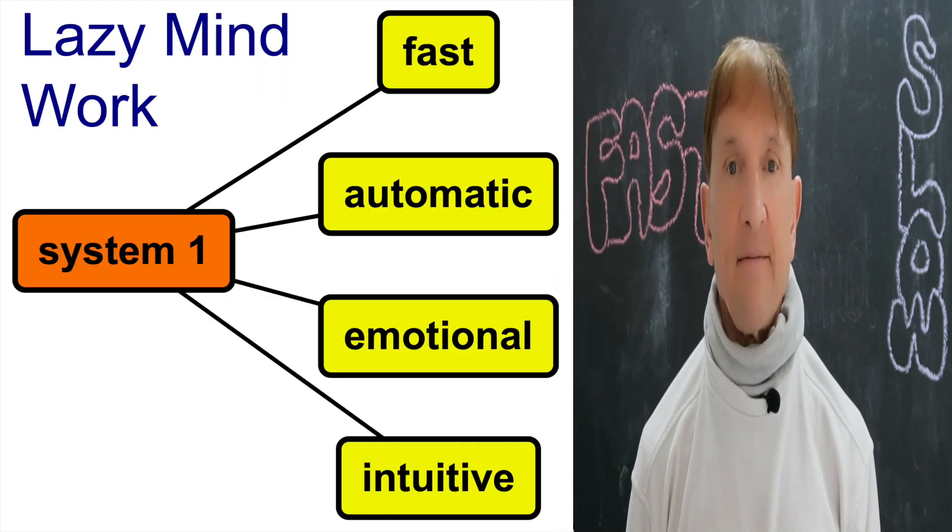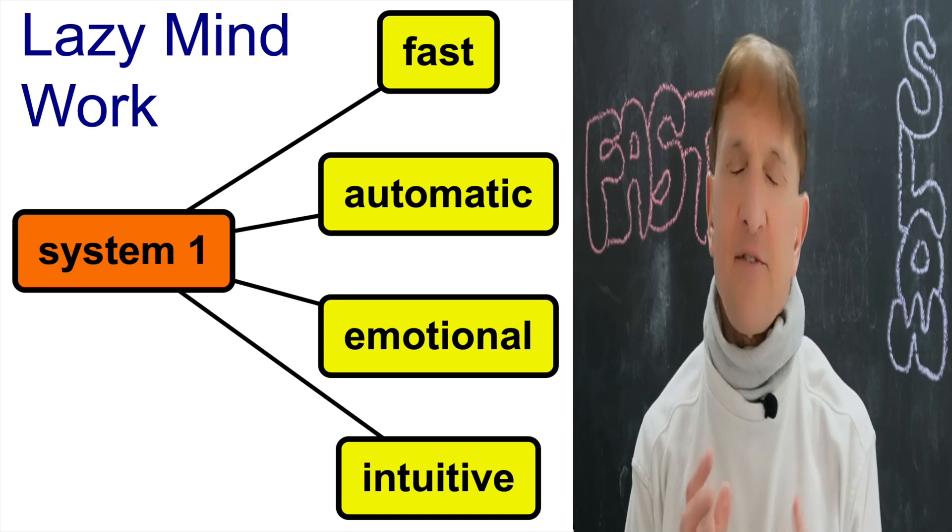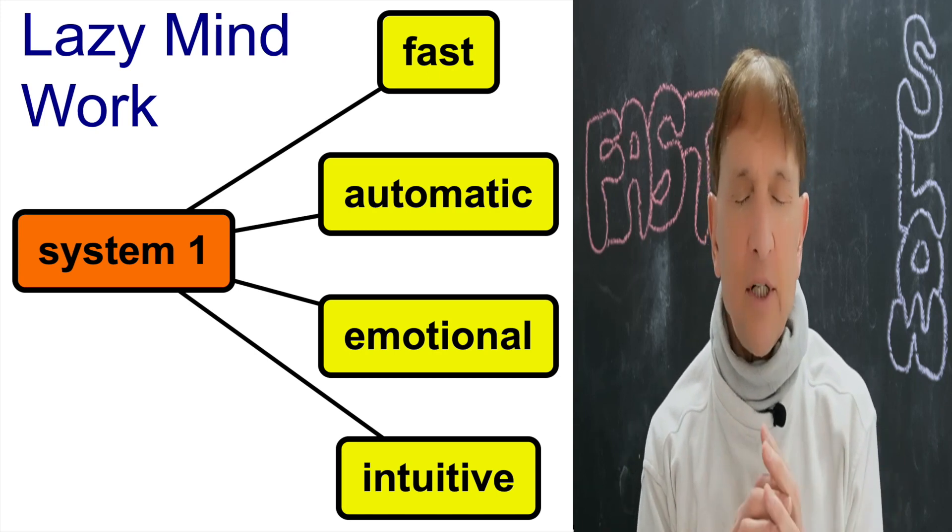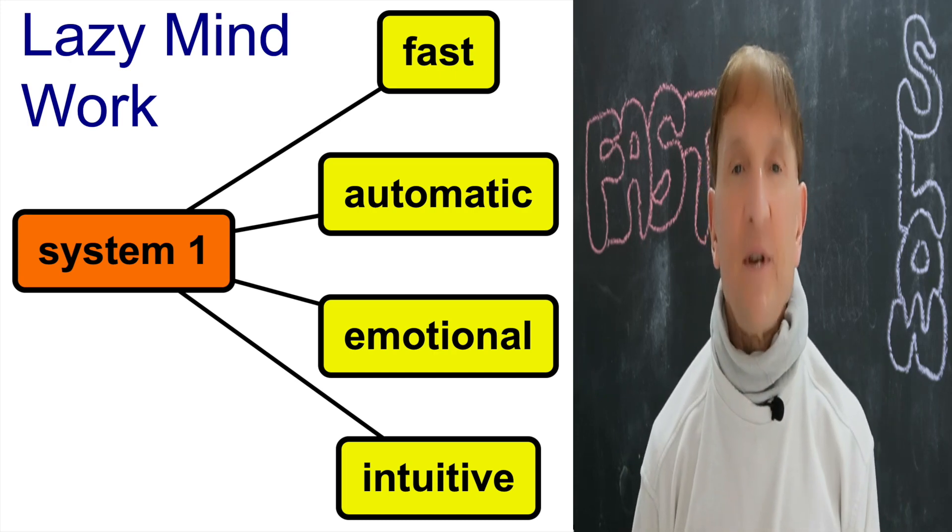What is System 1? System 1 is almost reflexive thinking. It's fast, automatic, non-deliberate. It comes to a speedy answer that may not always be right.